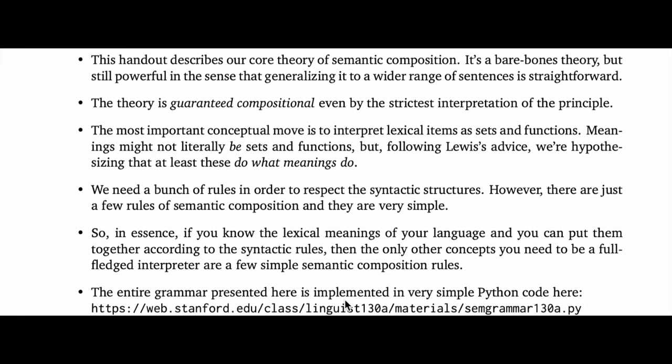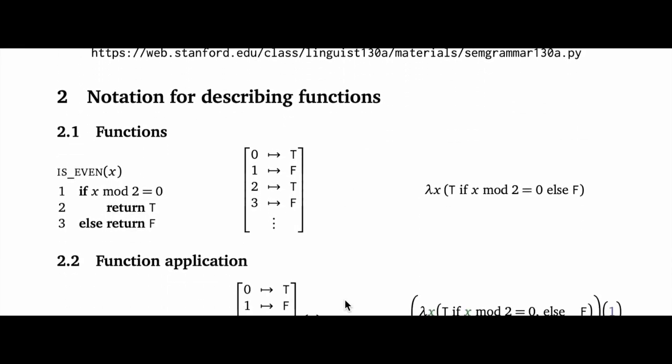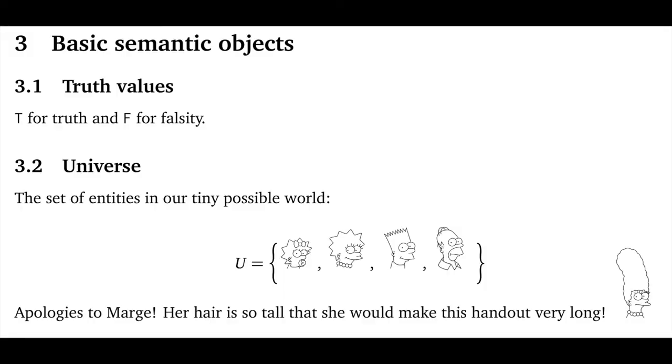Part one reviewed the high-level concepts and covered our notation for describing functions. Here we're just going to start directly with building our semantic grammar. The first major step in this is building the semantic lexicon, which is the place where almost all the complexity in the grammar lies.